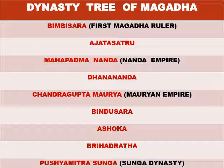The dynasty tree of Magadha begins with Bimbisara, the first ruler, succeeded by his son Ajatashattu. After Ajatashattu, the Nanda Empire came into form, led by Mahapadmananda, the founder of the Nanda Empire. His son Dhanananda succeeded him. After Dhanananda, Chandragupta Maurya laid the foundation of the Mauryan Empire with his guru Chanakya. He was succeeded by his son Bindusara, then Ashoka the Great, and finally Brihadratha, the last ruler of the Mauryan Empire, who was assassinated by his commander-in-chief Pushyamitra Shunga, who founded the Shunga dynasty.